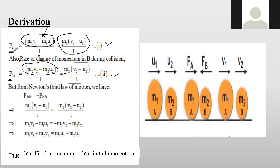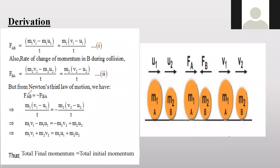According to Newton's third law of motion, when two objects collide, the forces on both objects are equal and opposite. So F_AB equals −F_BA — the negative sign indicates the opposite direction. We now substitute the values: m1(v1 − u1) / t = −m2(v2 − u2) / t. The t cancels from both sides.